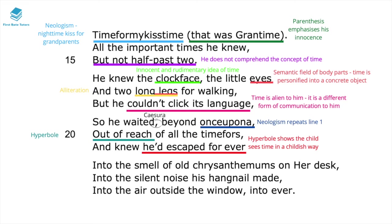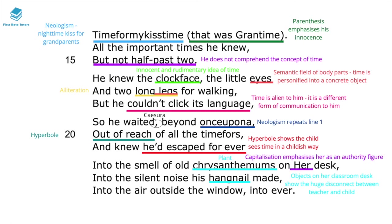'He knew he'd escaped forever' is further hyperbole showing how the child sees time in a childish way, and how fearful they are of being locked up indefinitely. The child focuses on things around the classroom — the smell of old chrysanthemums, the silent noise his hangnail made — showing the huge disconnect and power dynamic between teacher and child. The oxymoron 'silent noise' shows how time feels like it's moving ever so slowly.